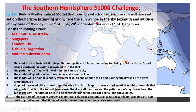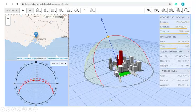If the position of the Sun in the sky is more than three degrees different from what timeanddate.com predicts, you need to provide proof that timeanddate.com is incorrect and your predictions are correct.